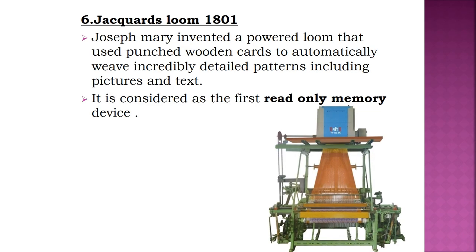The sixth evolution is the Jacquard Loom, invented in 1801 by Joseph Marie Jacquard. It used punched wooden cards to automatically weave increasingly detailed patterns including pictures and text. It is considered the first read-only memory device.